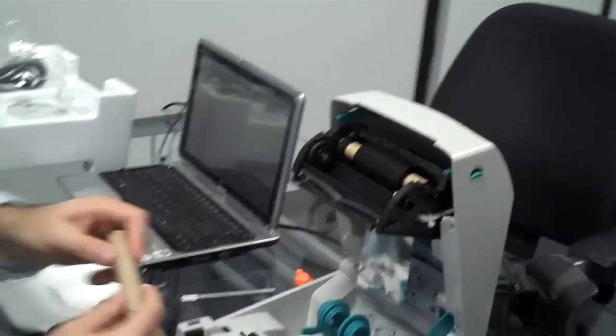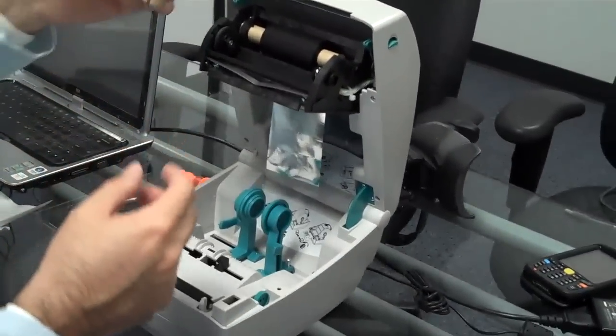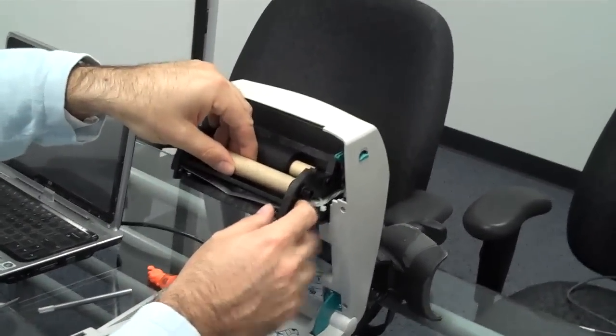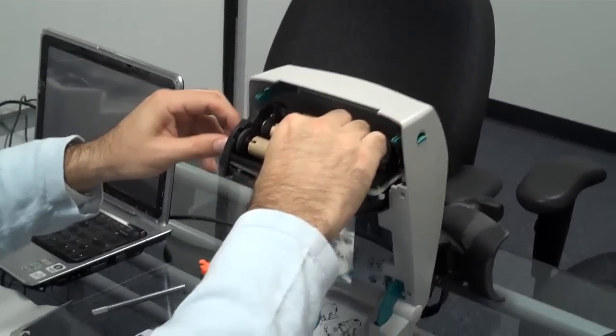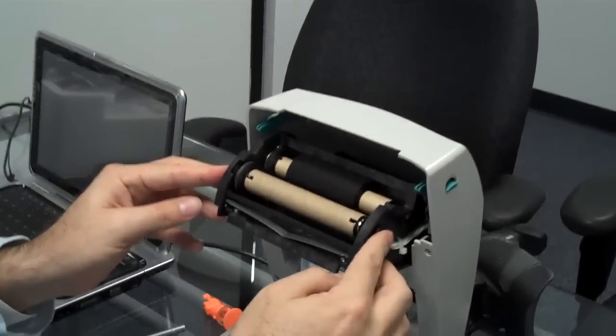So once you put in the ribbon backwards, you just bring this, put it in as well, and you want to make sure that it fits in nice and tucked and tight, like this.